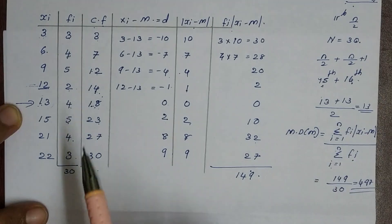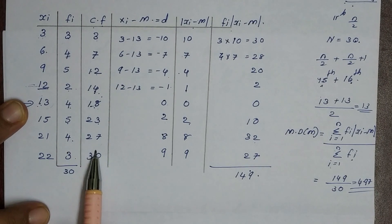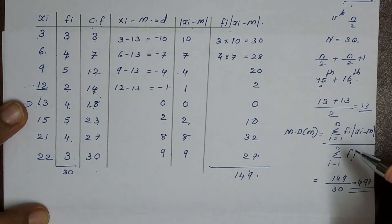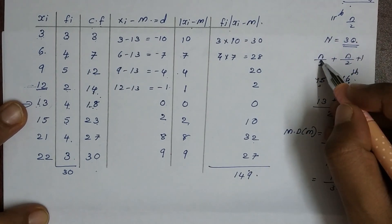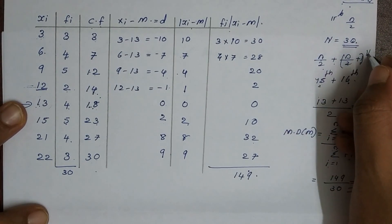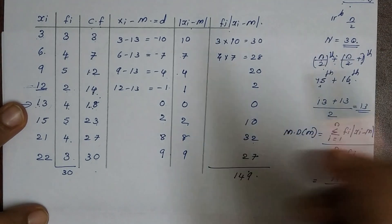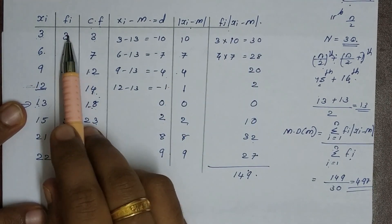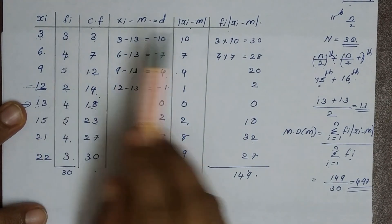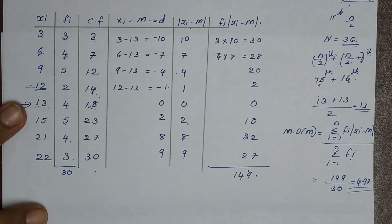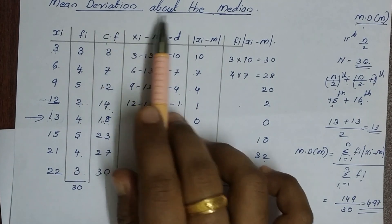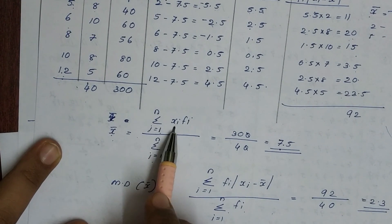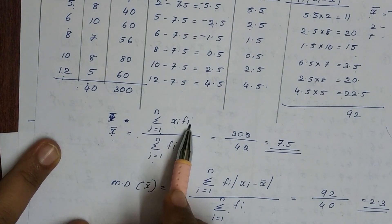Let me explain this problem. Here we have an extra step — that is cumulative frequency — and then we find the median. In the previous video, mean deviation was calculated about the mean using discrete frequency. Here, the difference is we use the median instead of the mean, so we first compute the cumulative frequency to identify the median.